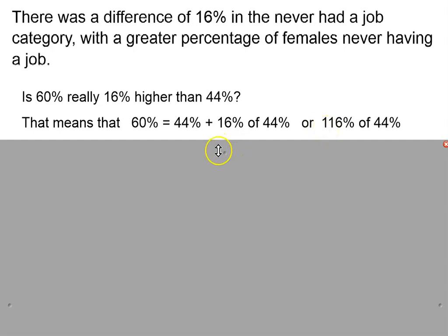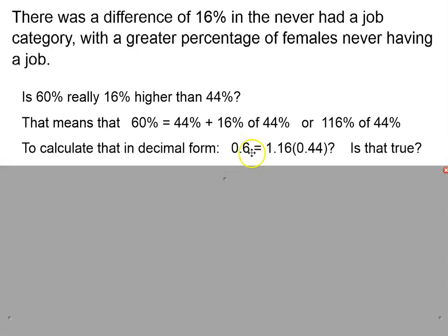Well, if we want to check this out, we have to put this in decimal form. In other words, is 0.6 equal to 1.16 times 0.44? Well, if you calculate, you'll find out that's not a true statement.